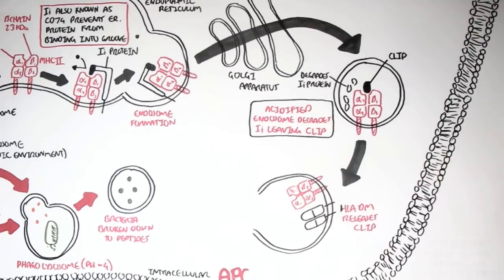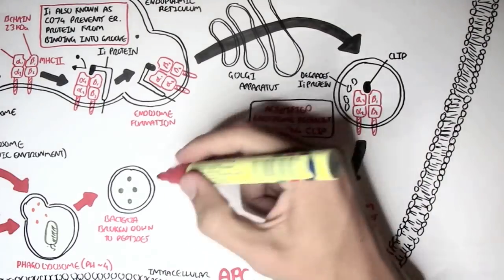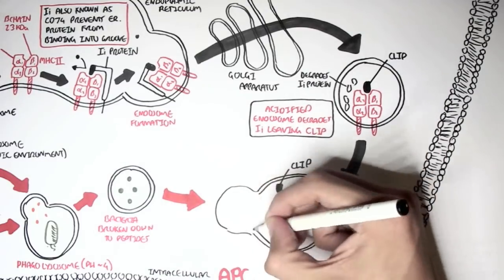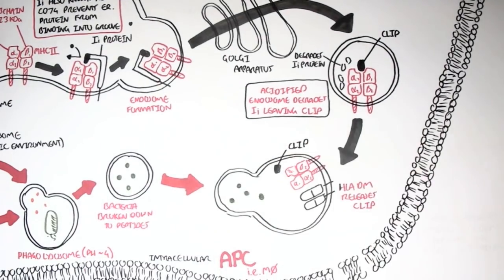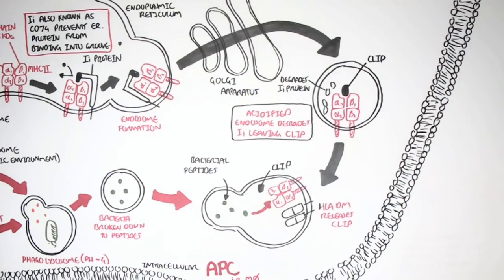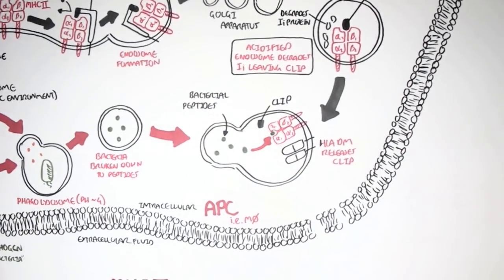The phagolysosomes containing bacterial peptides will then fuse with the MHC class II endosome. This will allow the peptides to bind onto the groove of the MHC class II. However, only a specific peptide, specific antigen, is able to bind onto the groove of the MHC class II. And this is for any MHC class II, because it's all unique.